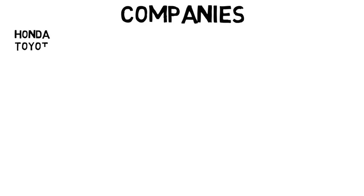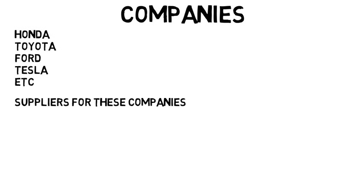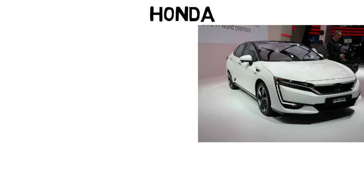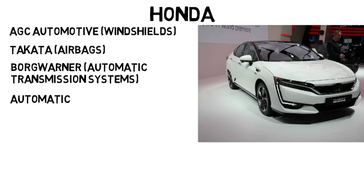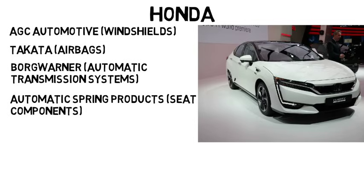When it comes to companies you want to work at, you may think of typical ones like Honda, Toyota, Ford, Tesla, and so on. But there are also suppliers for these companies, and you might do more of the cool design work at those places you probably haven't heard of. Not every part of a Honda is made by Honda — many other companies help with certain parts. According to Investopedia, AGC Automotive supplies Honda's windshields, Takata supplies their airbags, BorgWarner supplies the automatic transmission systems, and Automatic Spring Products supplies the seat components. So even if you don't land a job at Honda or Toyota, realize how many more companies there are that you can work at.